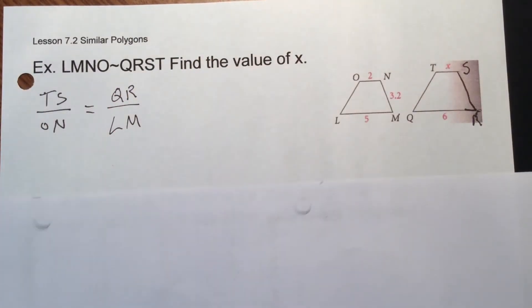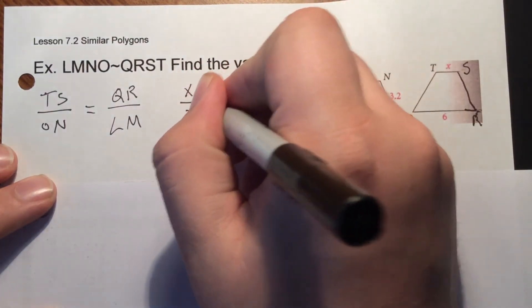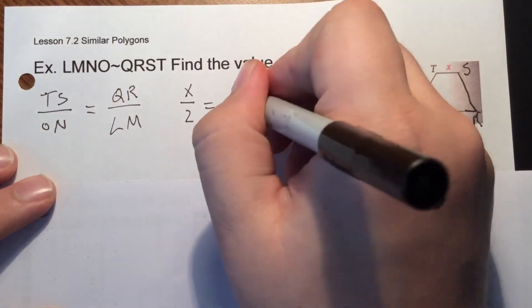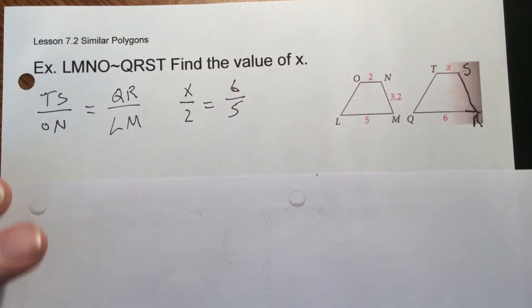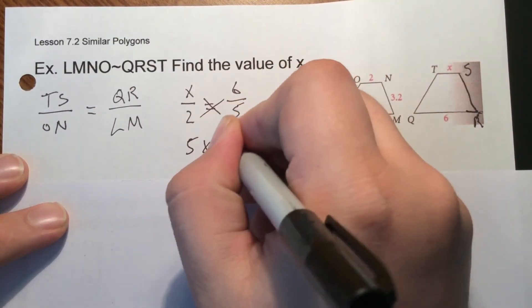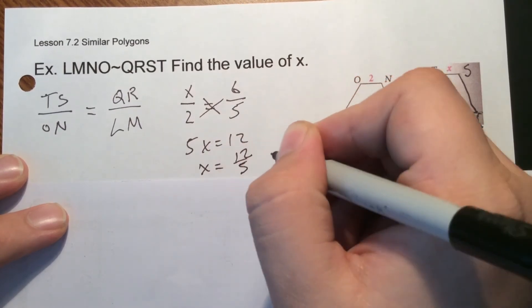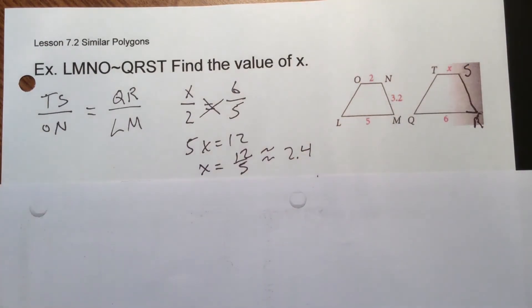From here, we're going to put our numbers and solve. So TS we know is X. ON is 2. On the other side, we know QR is 6. LM is 5. So from here, solving a proportion like normal, cross multiply. 5X would equal 12. So X would equal 12 over 5, which would be about 2.4 as a decimal.